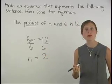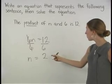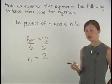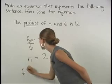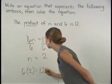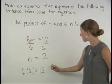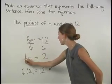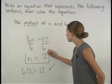Finally, remember that we can check our answer by plugging a 2 back into our original equation. So we have 6 times 2 equals 12. Since this is a true statement, our answer is correct, n equals 2.